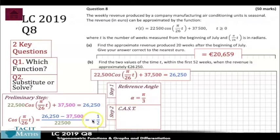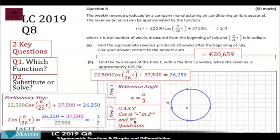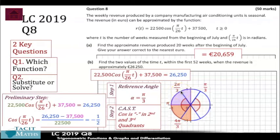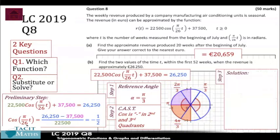Next we go to CAST and the unit circle. Because it's a minus, cosine is negative in the second and third quadrants. I always recommend drawing this out. Pi over 3 is 60 degrees — all angles with a reference angle of 60 degrees could be solutions. We're looking at the second and third quadrants, so those are the two angles we want. The angle in the second quadrant is pi minus pi/3, which is 2pi/3, and in the third quadrant it's pi plus pi/3, which is 4pi/3.